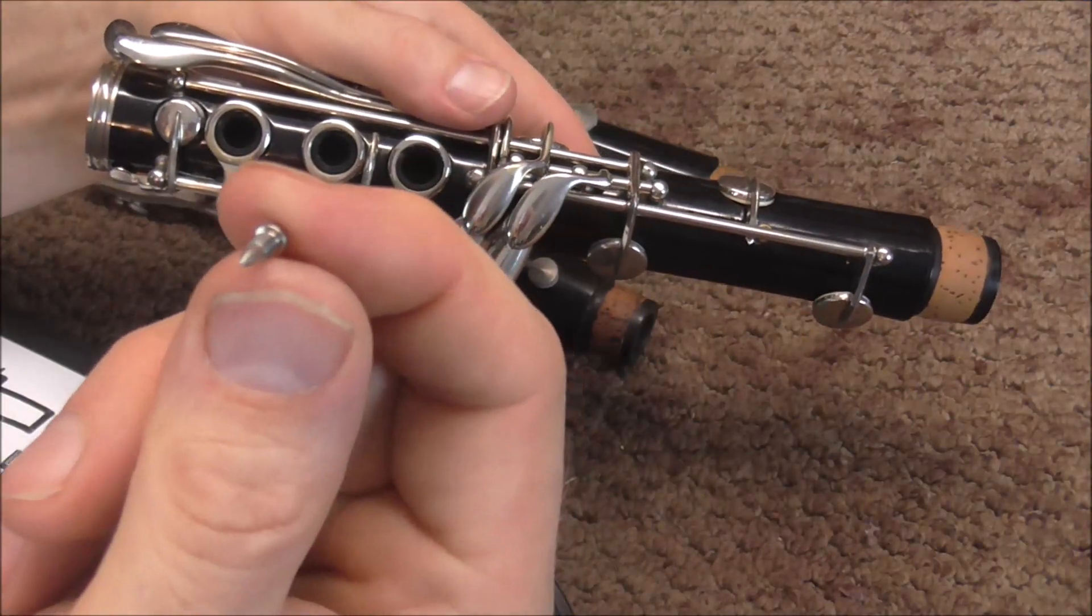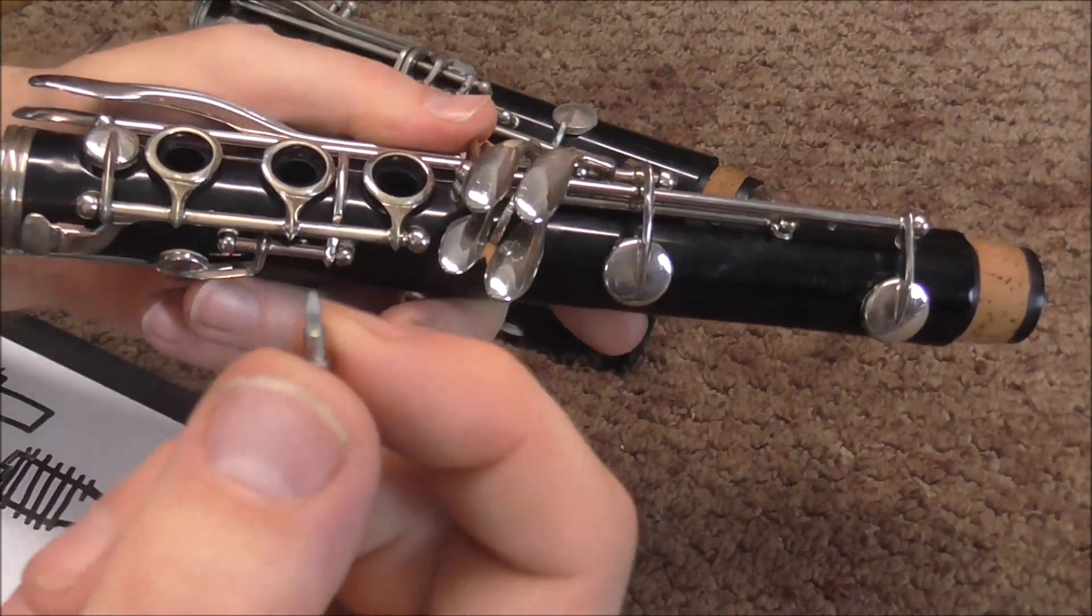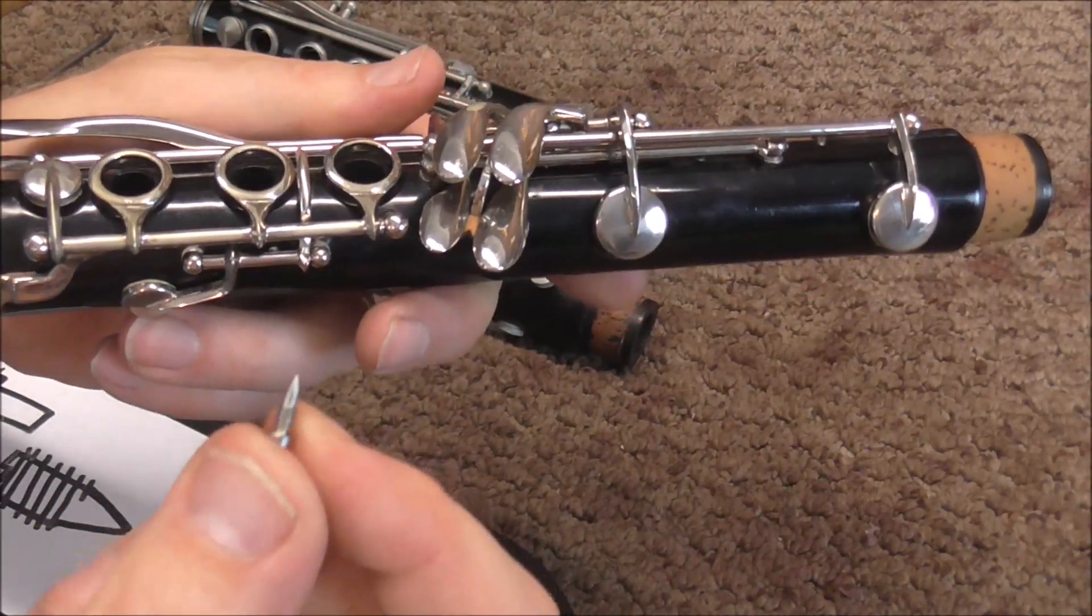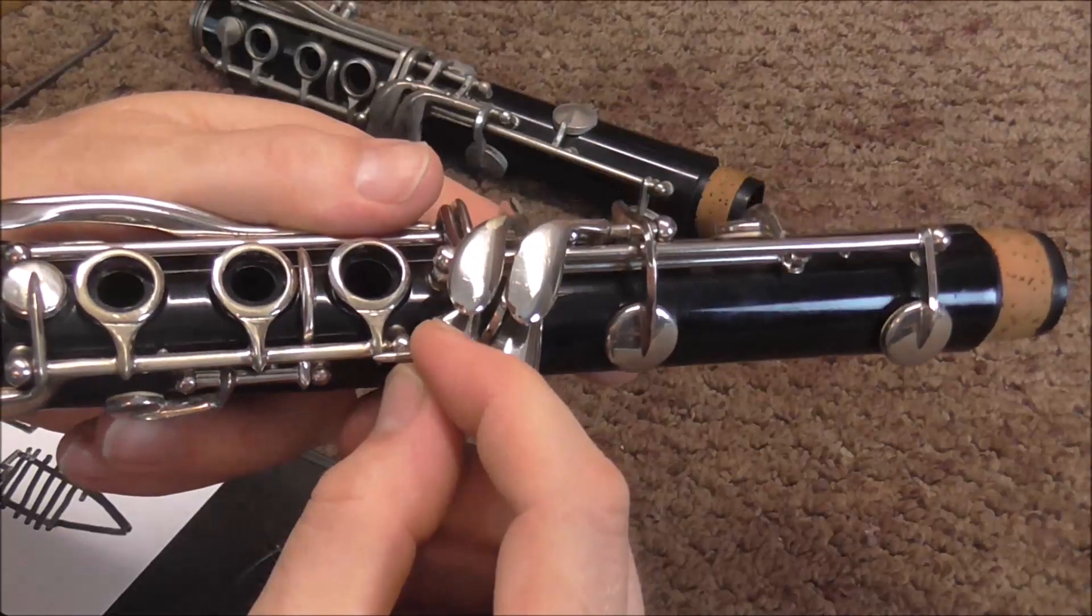This video is going to be about the different types of pivot screws. Pivot screws are little screws that the key pivots around. If a key has pivot screws instead of a hinge rod, it's going to have two pivot screws - one goes in one post, and one goes in the other post.